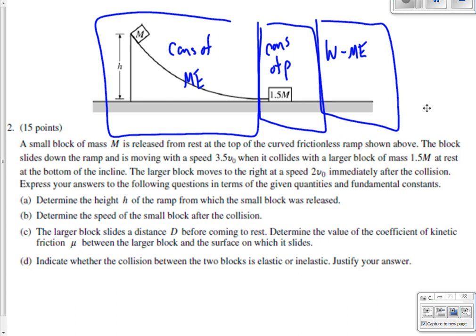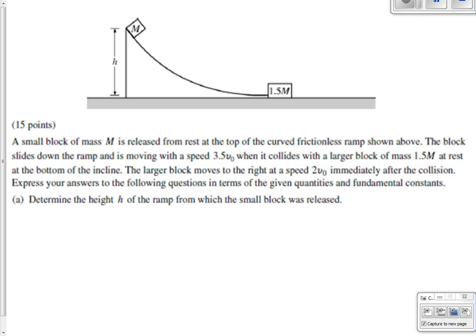So nice, again, a nice review, kind of ties it all together. So part one says determine the height of the ramp. So just determine the height of the ramp. We don't really care about this other block here. We just know that there is some amount of gravitational potential energy up there, and all of that is going to be converted into kinetic energy down there.